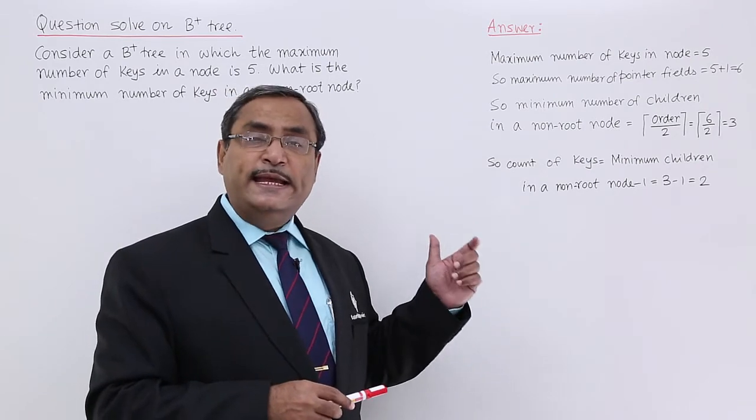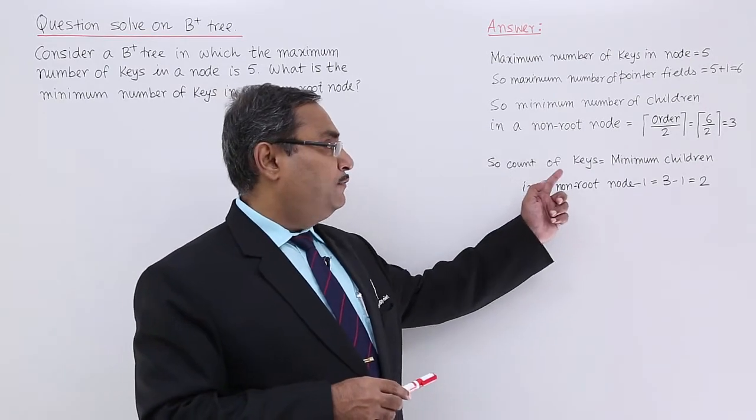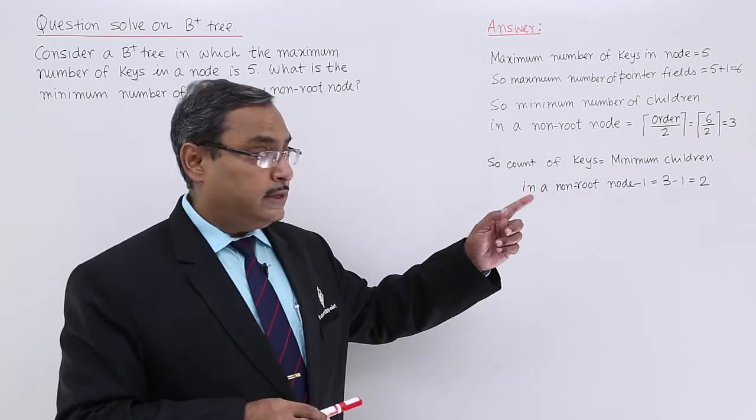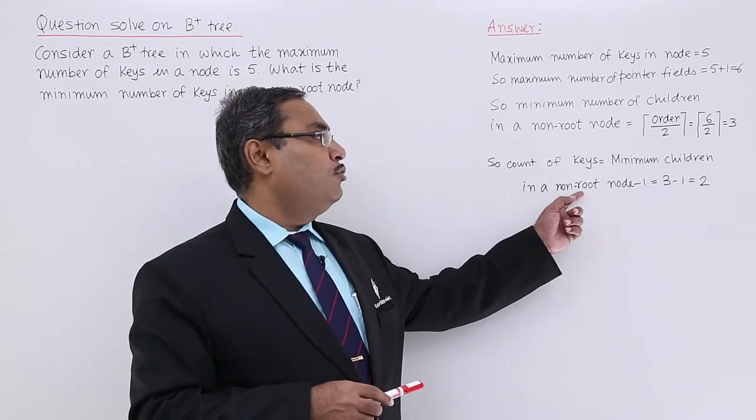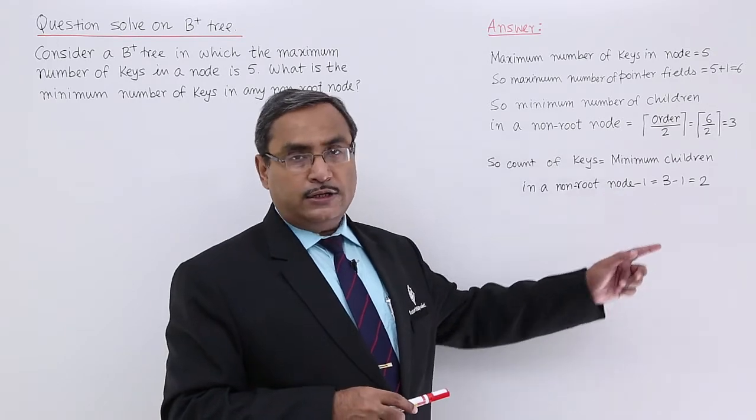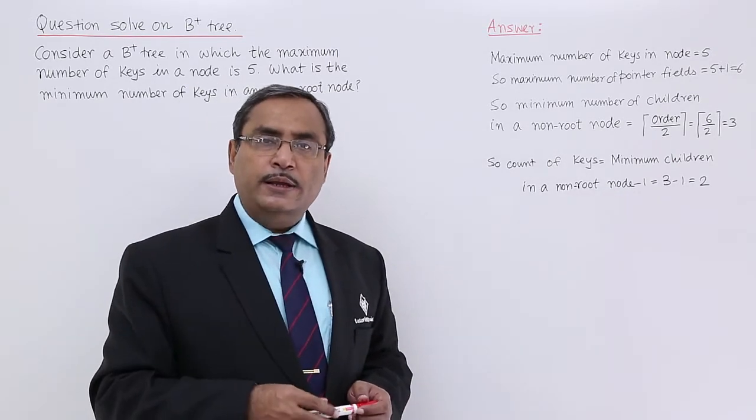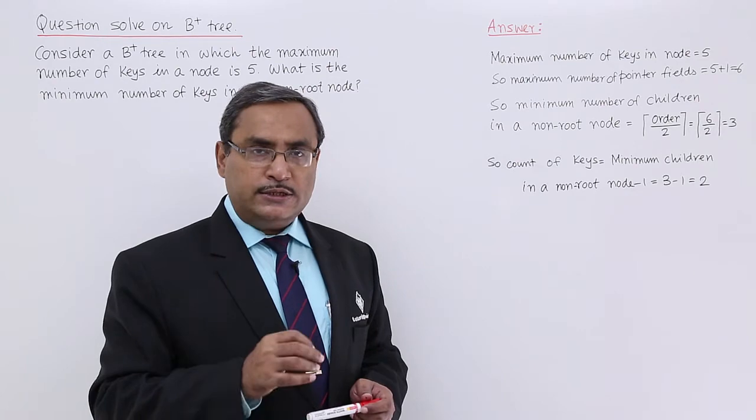As we are having 3 pointers rather, the count of keys is equal to minimum children in a non-root node minus 1. We know that always the keys will be number of pointers minus 1.